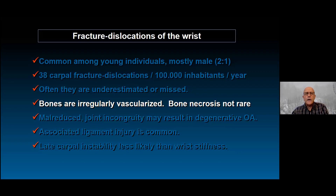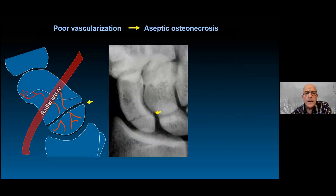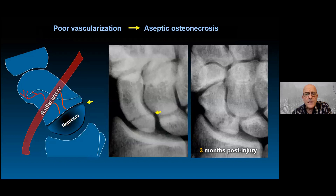Another common concern is that those carpal bones are irregularly vascularized. Avascular necrosis is not unusual, particularly in cases where there is an apparently benign injury that has stopped all intra-osseous vascularization of the proximal pole. In only three months, the proximal pole can be devastated by that necrosis.